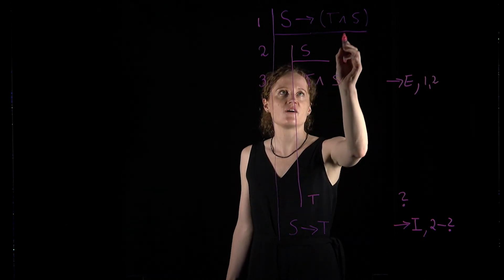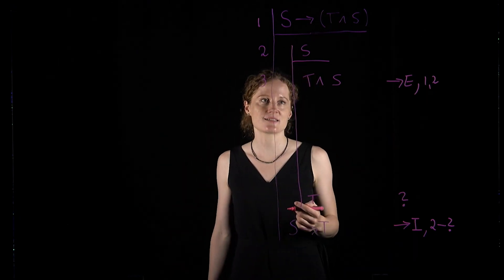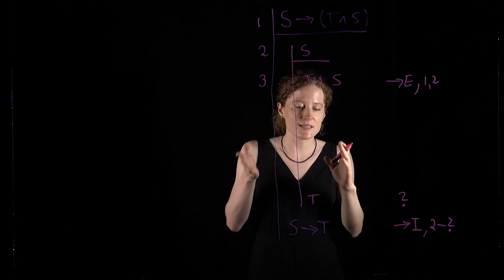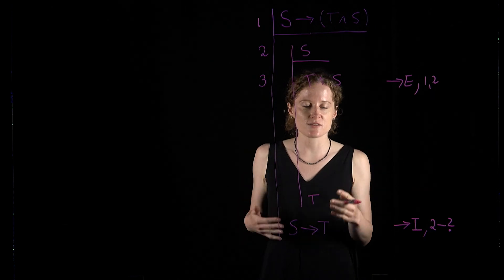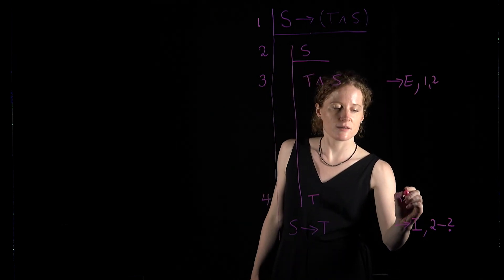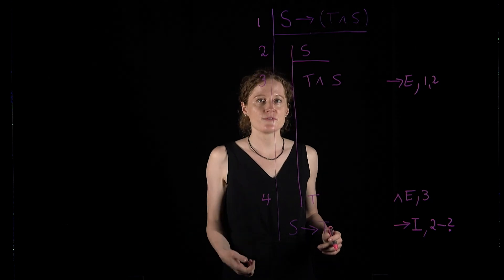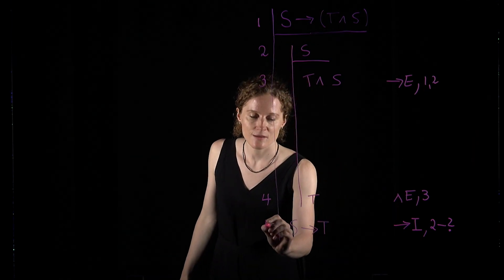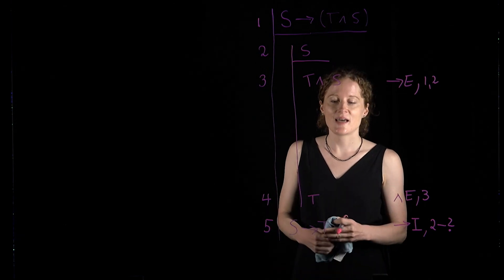I have inferred the consequent T and S given that the antecedent S is true. We have established the conjunction T and S. Since if a conjunction is true then either conjunct must be true, I can infer the first conjunct T by citing conjunction elimination applied to line 3. In this sub-proof from lines 2 to 4, I have shown that under the supposition that S it follows that T. That means I can now infer the conditional if S then T, citing conditional introduction applied to lines 2 to 4. And that's our complete proof.